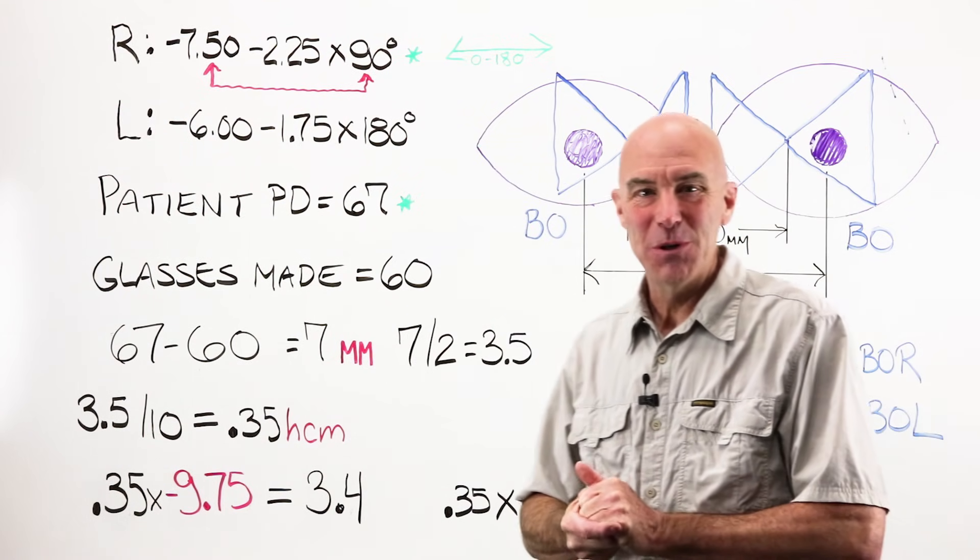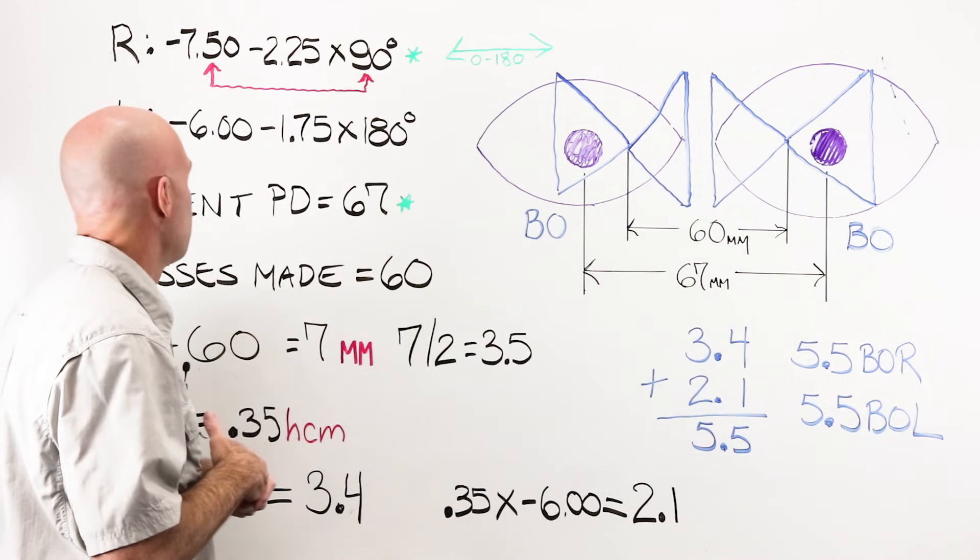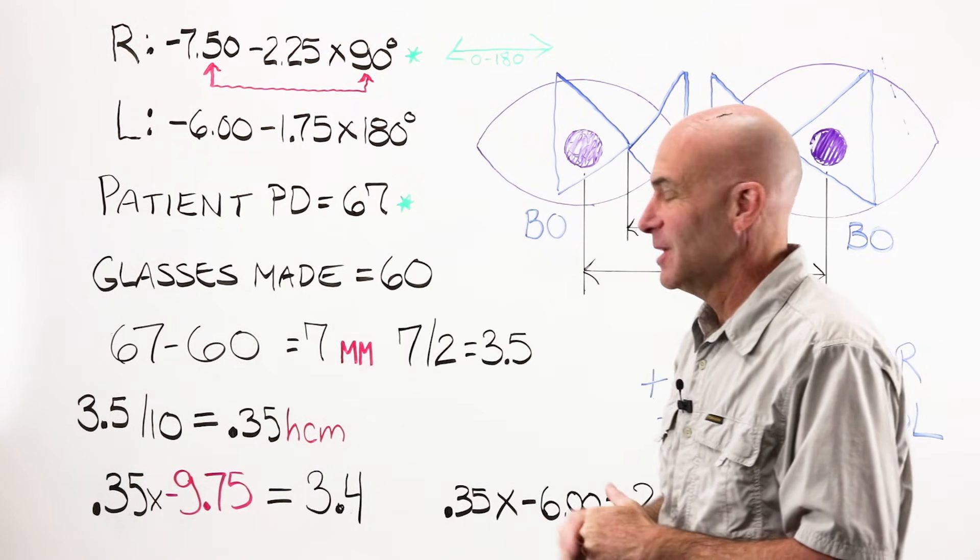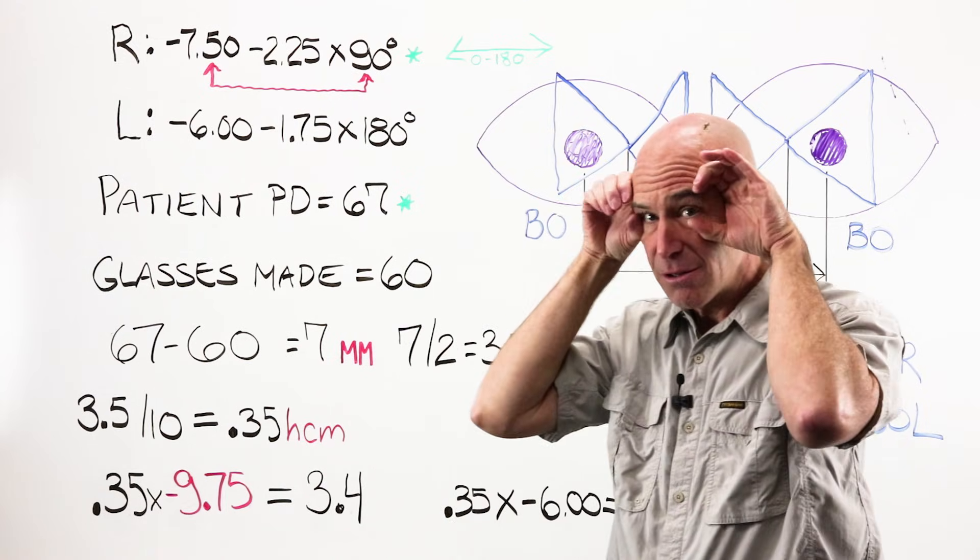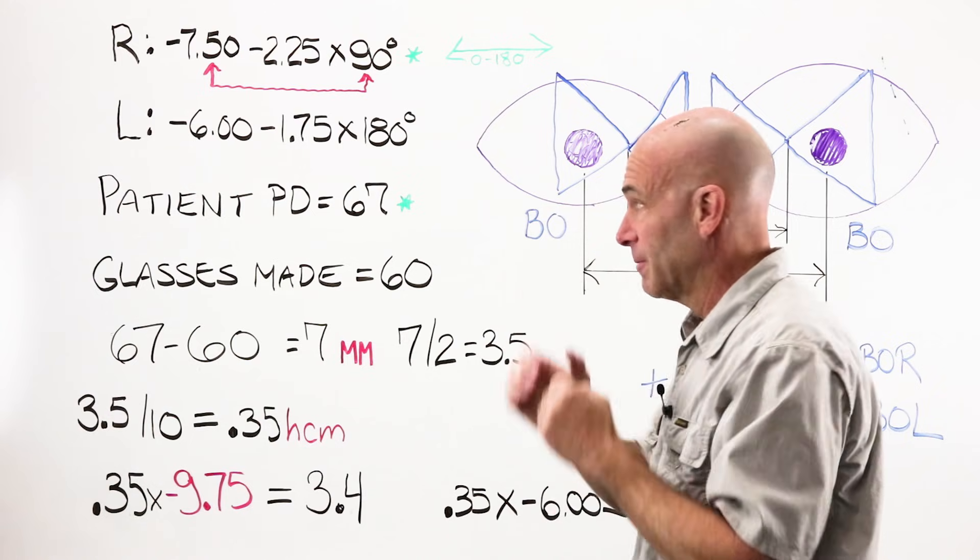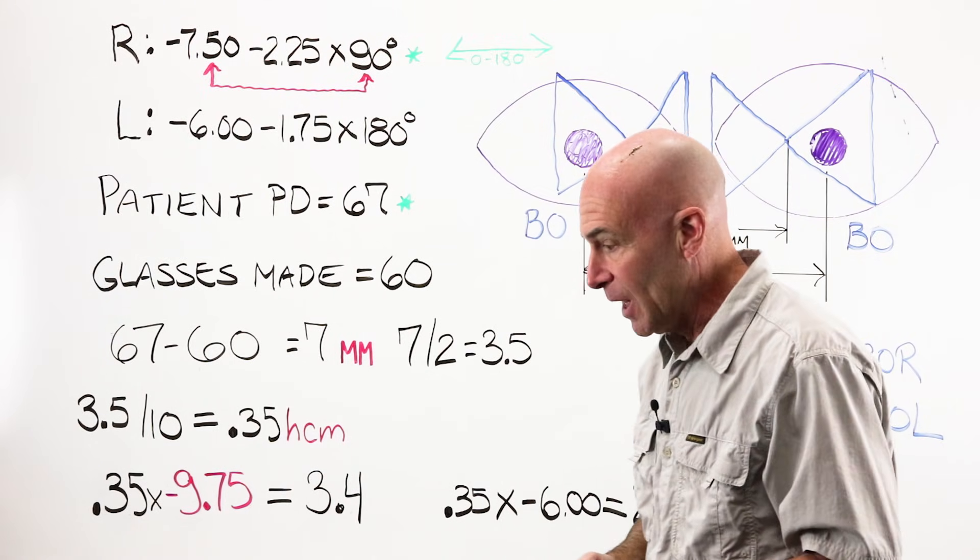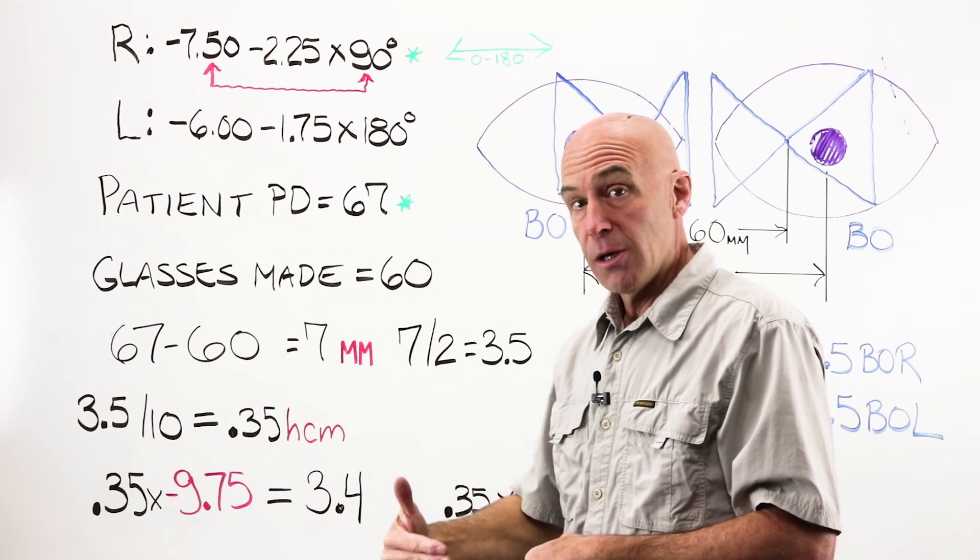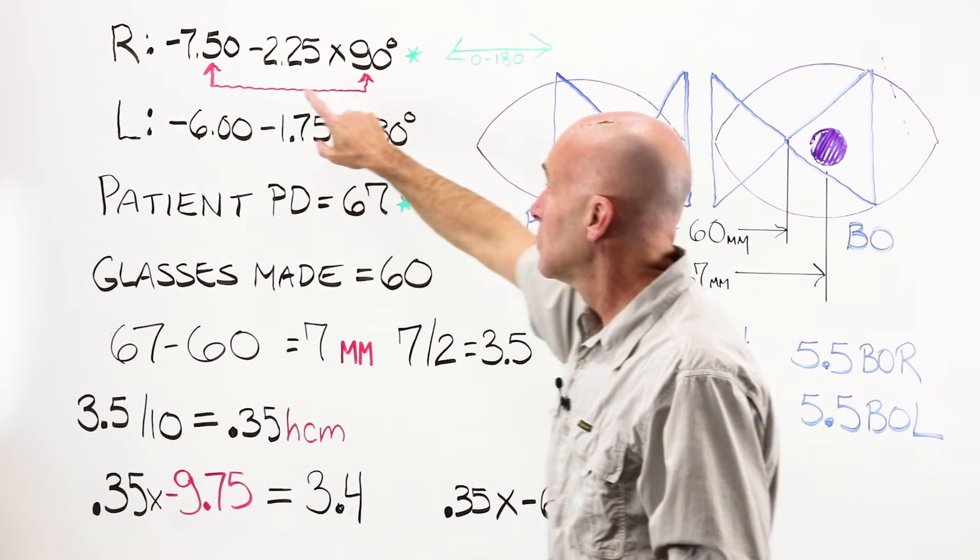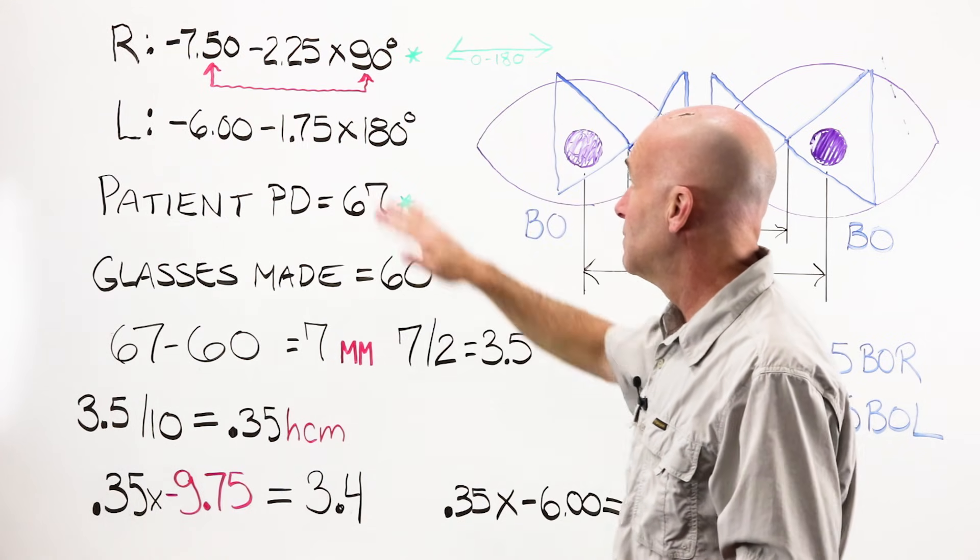All right. Example number three. In our right we have a minus 7.50 minus 2.25 at 90. In our left we have a minus 6 minus 1.75 at 180. Our patient PD is 67. It's a big person. Big wide PD. Eyes are set over here someplace. But sadly our glasses were made with a PD of 60. Meaning the OCs are in here and my eyes are out here. My error, because it is a PD, runs along my 0-180, my horizontal meridian. So I need the power in both eyes at 180. We're very lucky in this particular case because all I have to do is flat transposition to convert this from 90 to 180 degrees. Minus 7.50 plus my minus 2.25, 9.75 at 180.